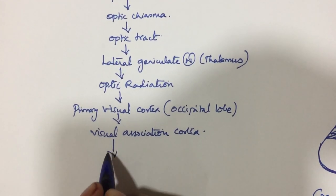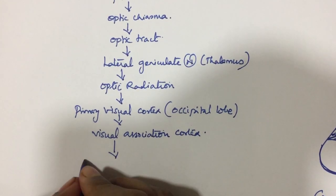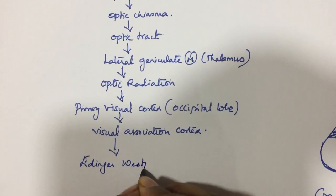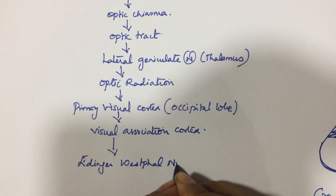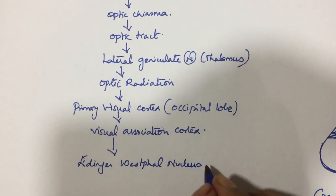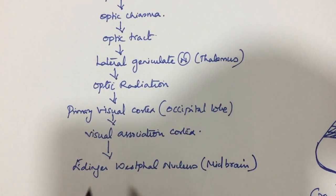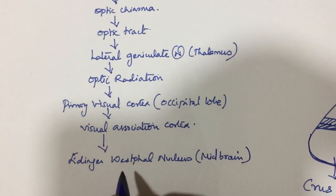From the visual association cortex, which is also present near the primary visual cortex in the occipital lobe, the information is transferred to the Edinger-Westphal nucleus. The Edinger-Westphal nucleus is present in the midbrain and it is a parasympathetic ganglion.